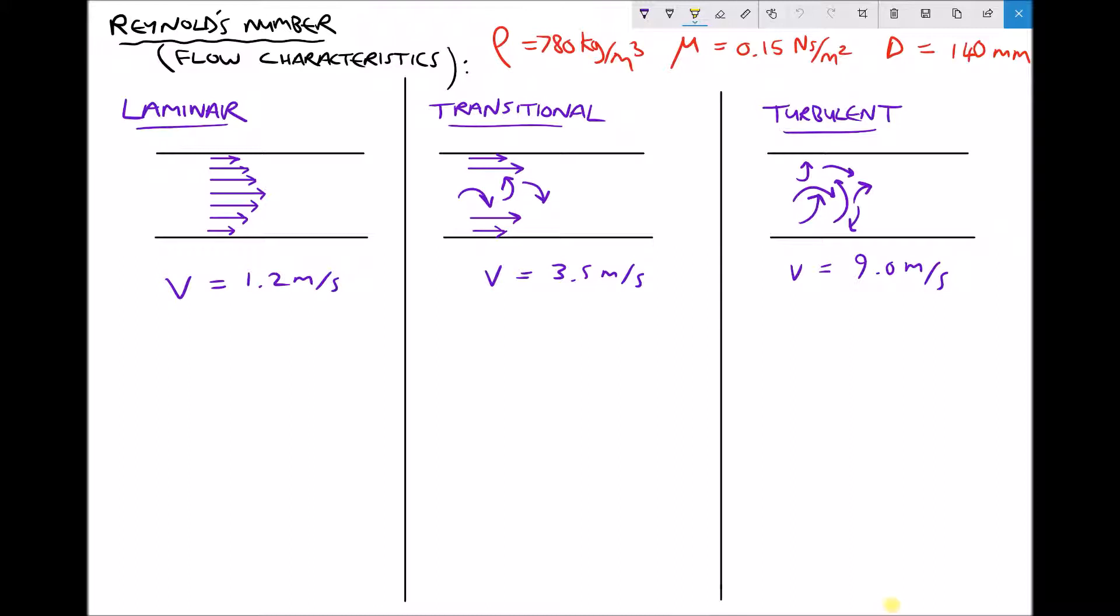In the example we're going to be discussing, our fluid has a density of 780 kg per meter cubed, a dynamic viscosity of 0.15 Ns per meter squared, and we're assuming that the pipe diameter in all three of these examples is 140 mm. So we have the same fluid travelling through the same pipe. The only thing that's changing is the velocity of the fluid.